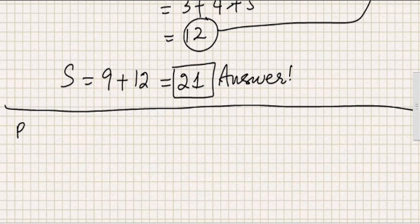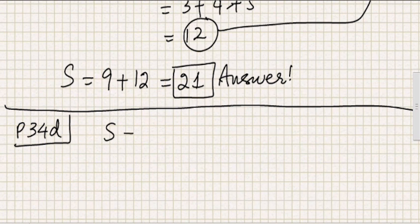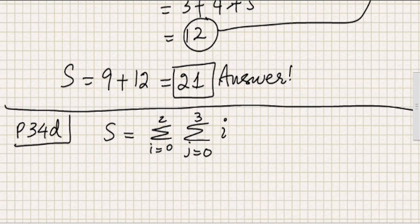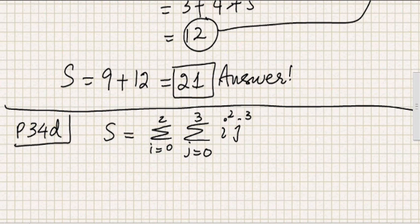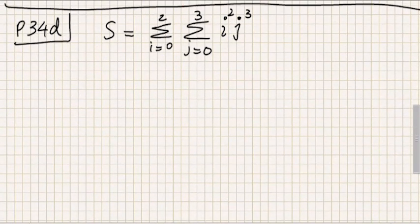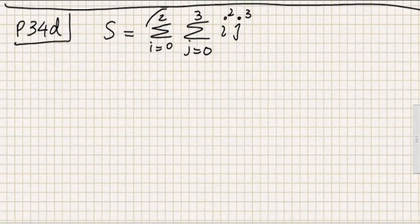Let's do another problem. The next problem is from 2.4, problem number 34d. Let me name this summation s again. S is equal to the sum with i going from 0 to 2, then the sum with j going from 0 to 3, of i squared times j cubed. You take the square of i and the cube of j and multiply them together to get each term.